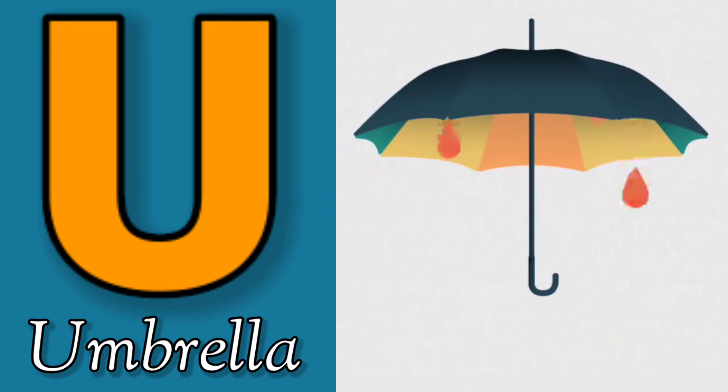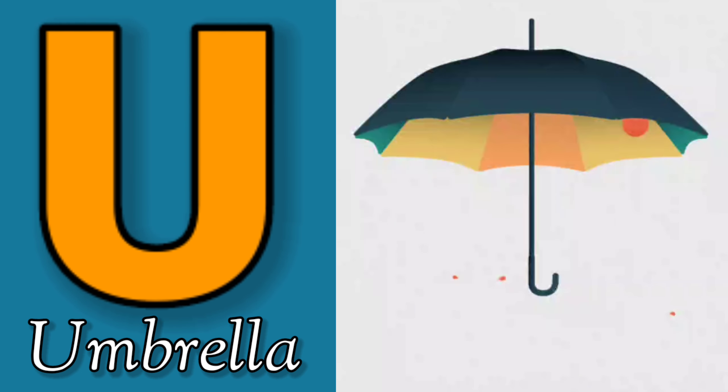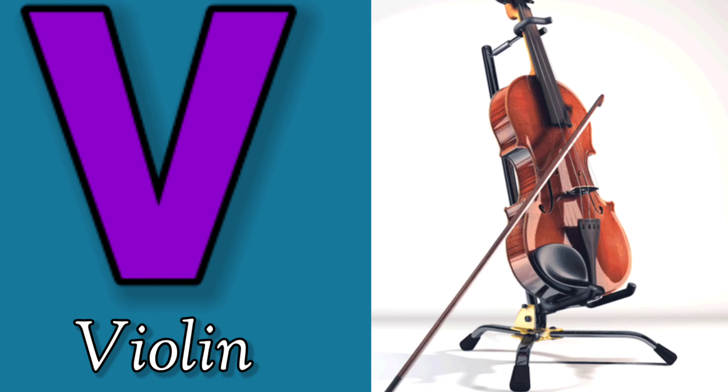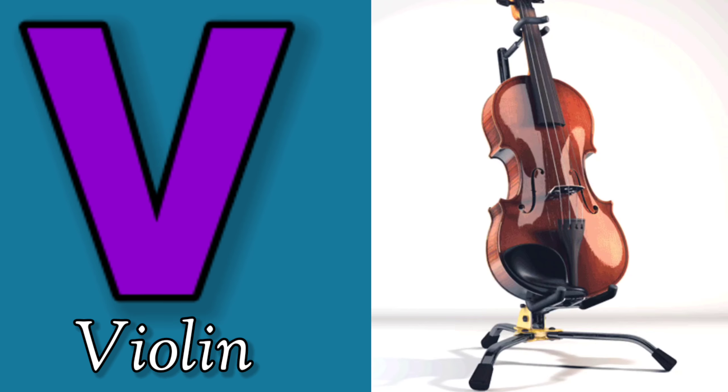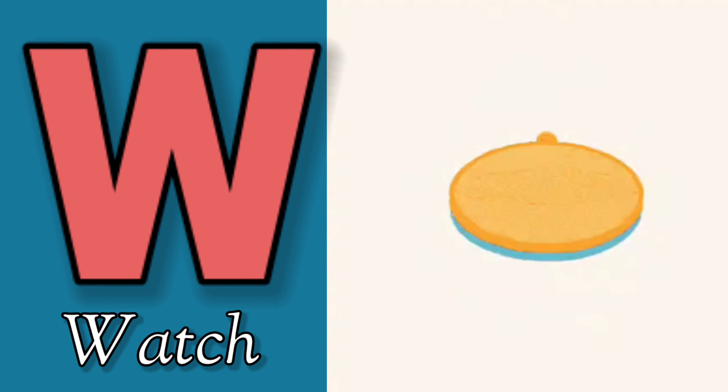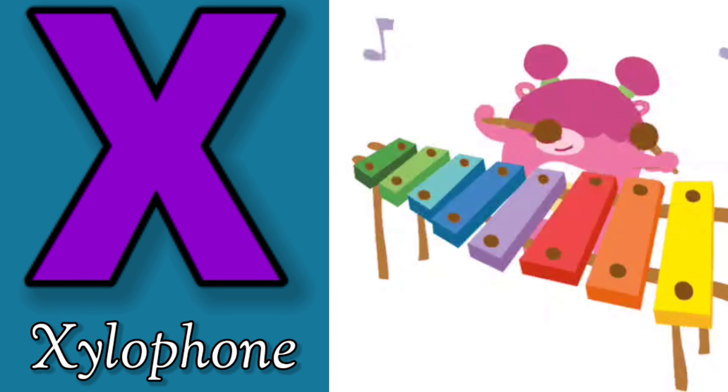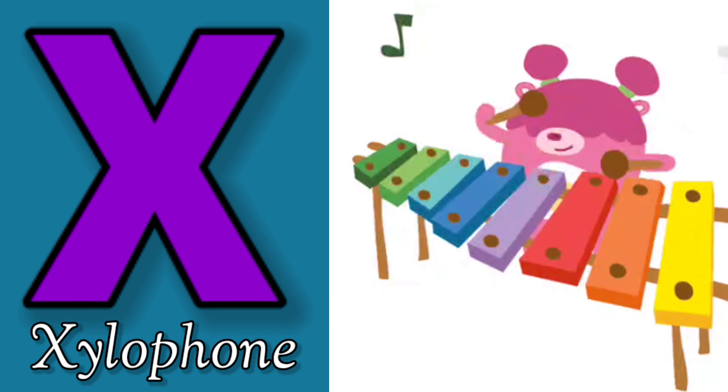U is for Umbrella, U-U-Umbrella. V is for Violin, V-V-Violin. W is for Watch, W-W-Watch. X is for Xylophone, X-X-Xylophone.